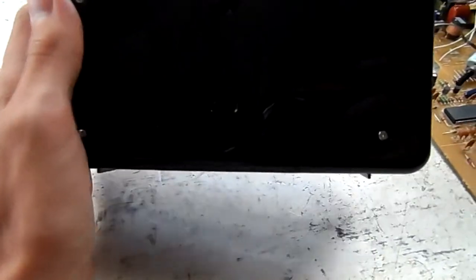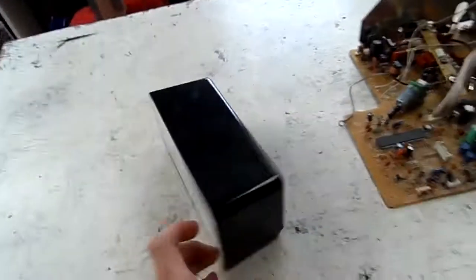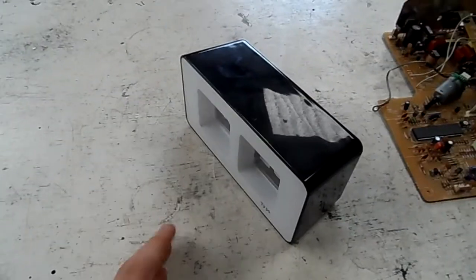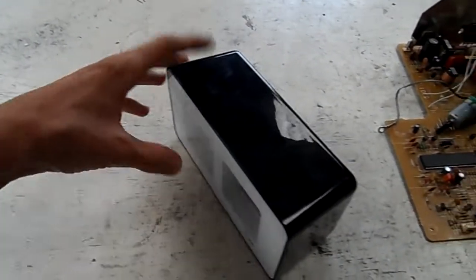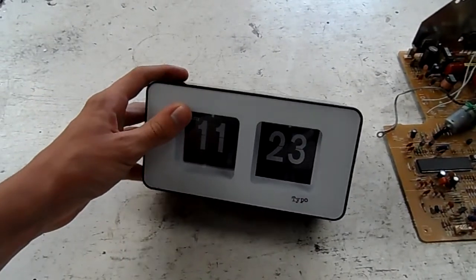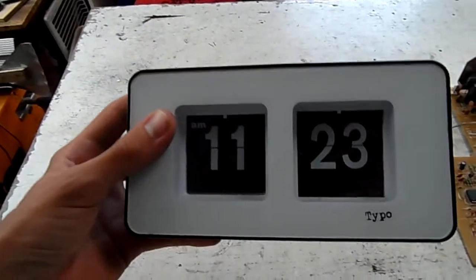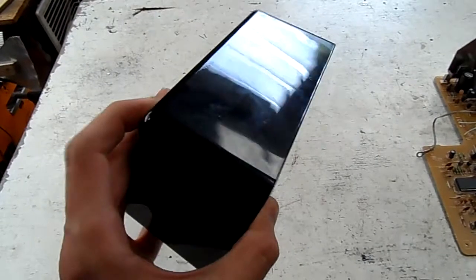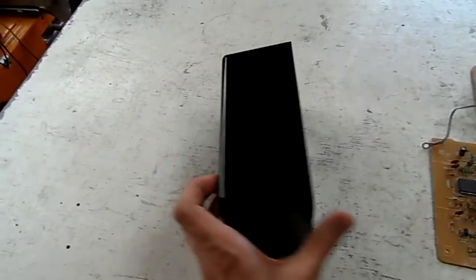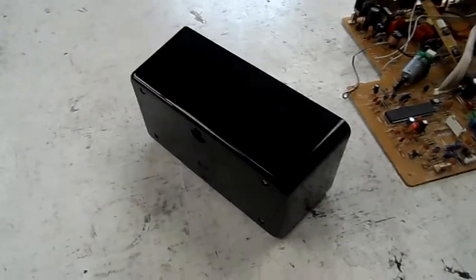It just takes two AA batteries but it goes through literally about four sets of two in about a week. So it's way too inefficient to be able to use as a desktop clock. So I figured I may as well open it up and see how it works.